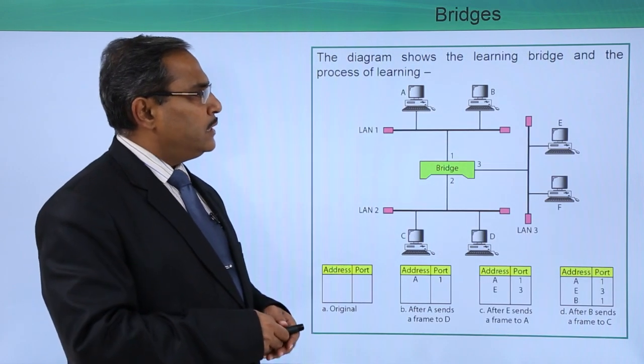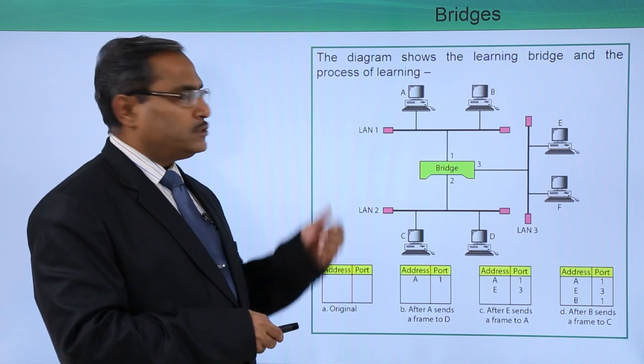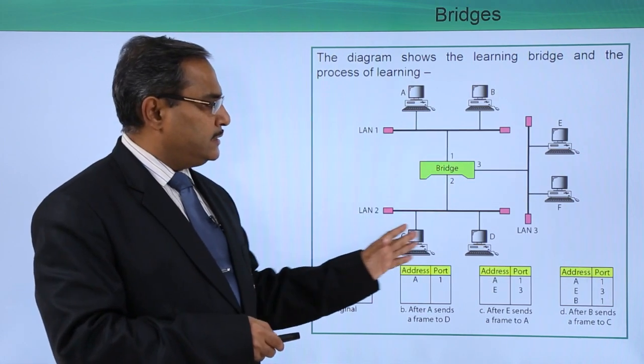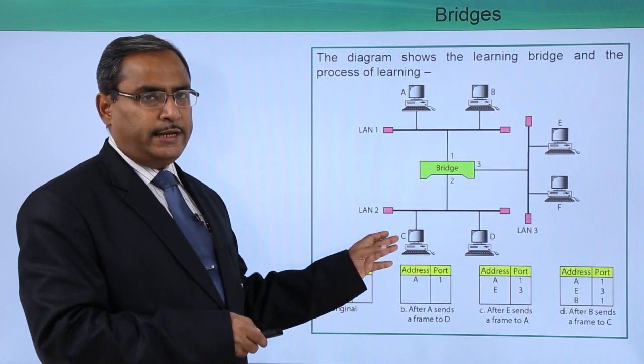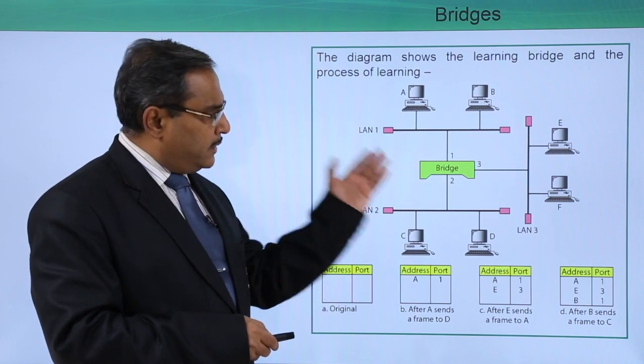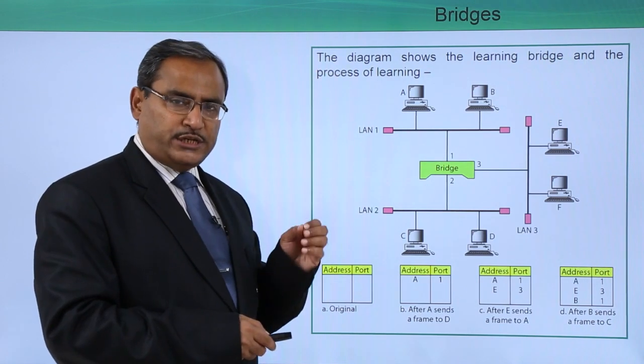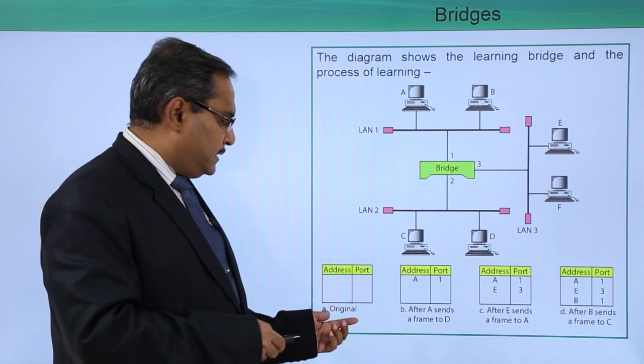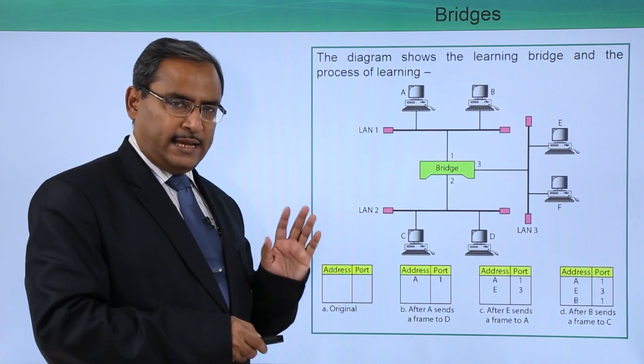The diagram shows the learning bridge and the process of learning. Here we are having a bridge which is connecting three LANs, and here we have made two stations for each and every LAN. At first, this original bridge table is empty.